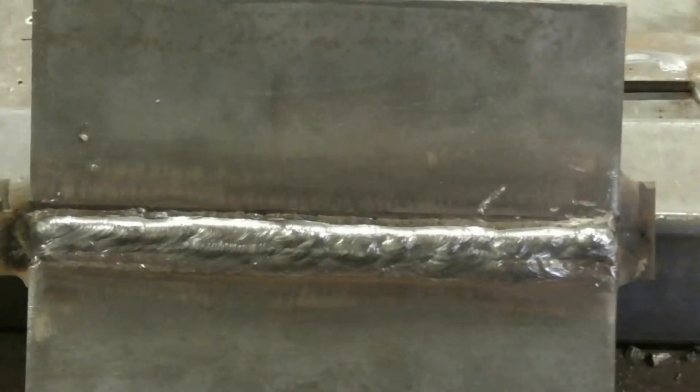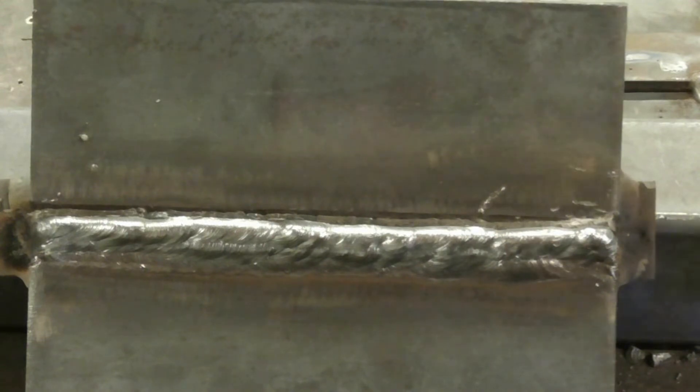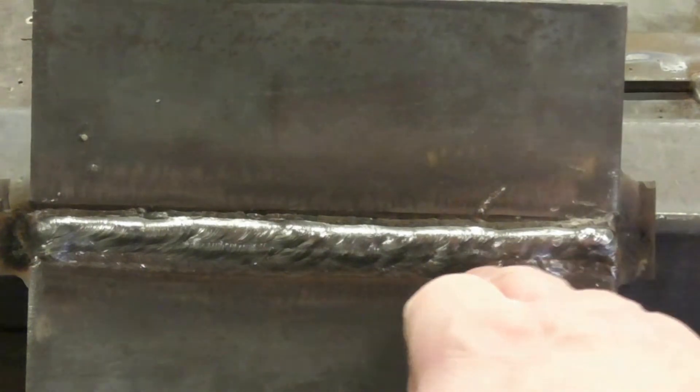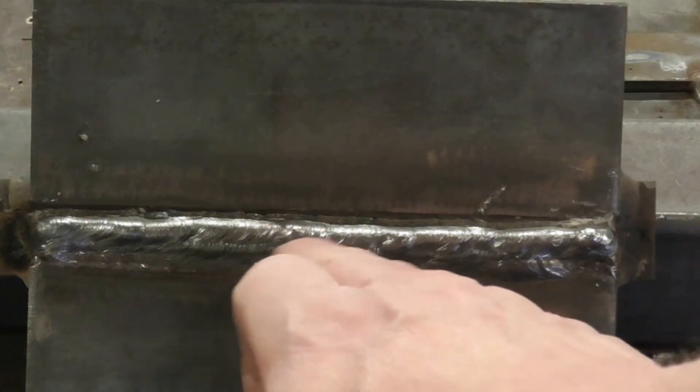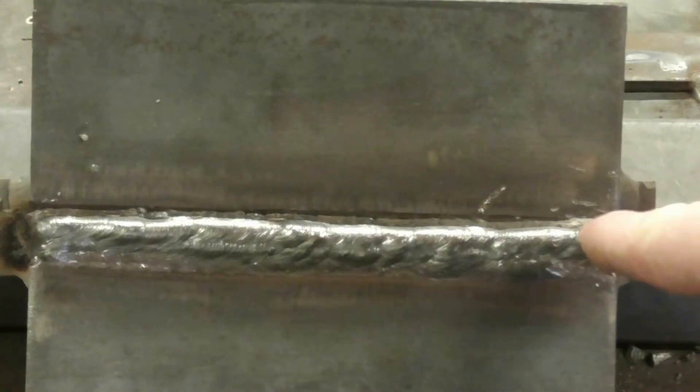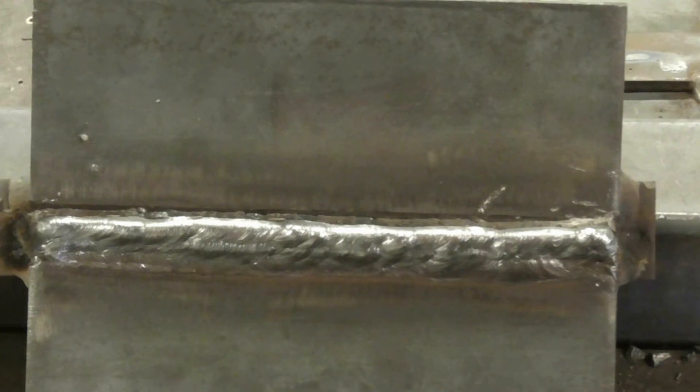So we just got done with pass number six, leaving us a nice little groove here, get our fourth cover pass in. Six went pretty good, got a little touch high there, got a little bit of slag trapped in there. I'm going to go hit that with a wire wheel. If I hit it with a wire wheel, the weld is so shiny you can't get a camera shot, so I'm going to do that after I get done previewing bead number seven. Let's consider bead number seven previewed, let's do it.